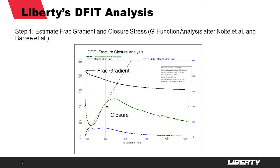Step number one is estimating the fracture gradient and the closure stress. We use the standard g-function plot to do that, and the way we pick the closure stress is basically the first departure from the green-colored g-derivative curve, and that will be our closure stress estimate.